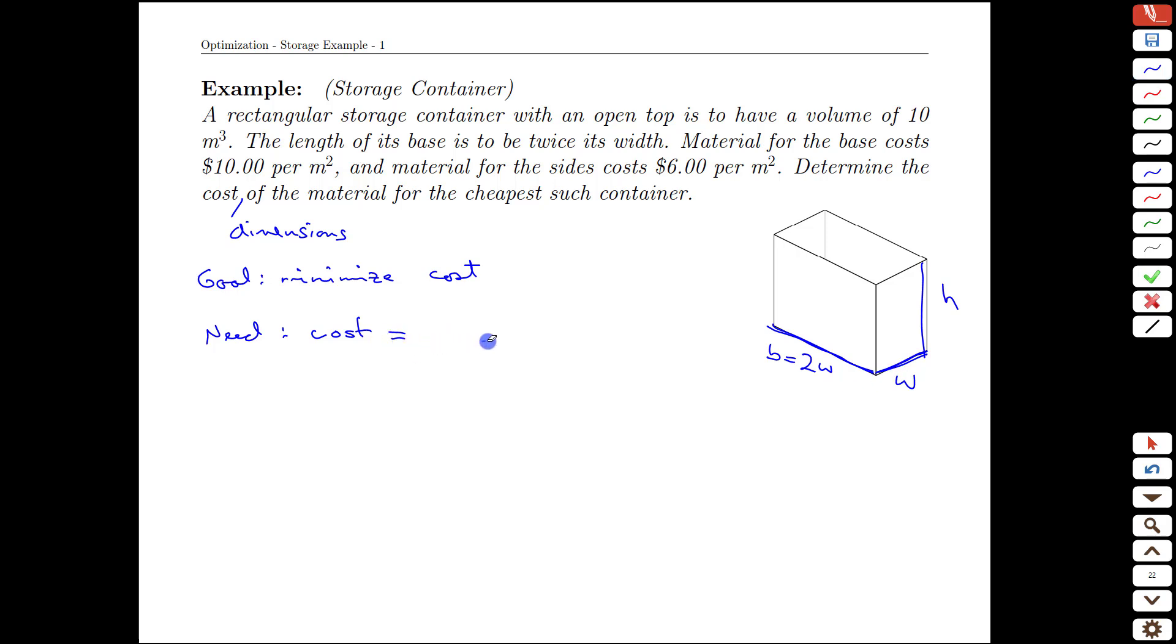All right, so what's the cost made up of? Well, the cost is going to be made up of the base cost plus the side cost, and there's more sides, so sides cost. What is the base cost? Well, it's going to be a rectangle that is w by 2w, w times 2w, and if we look at units, that's going to be meters squared. That's the area of the base.